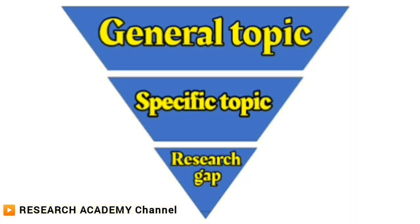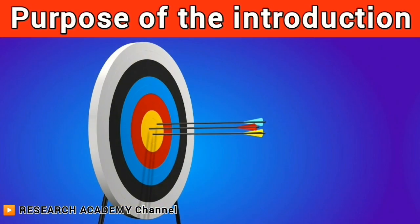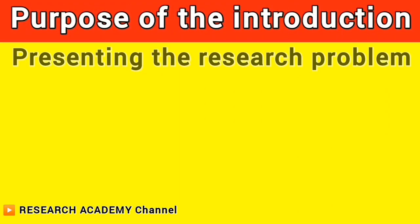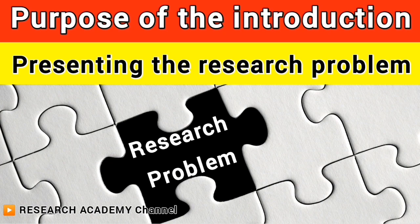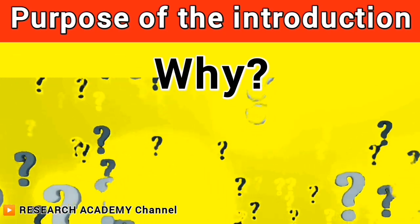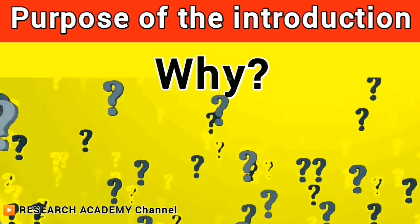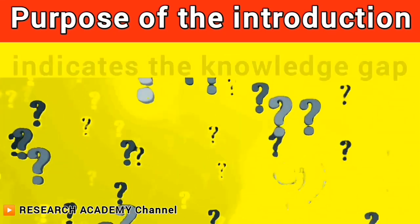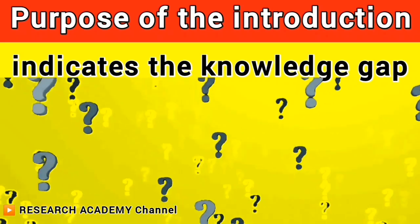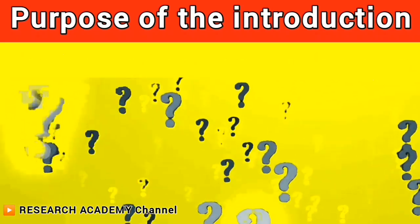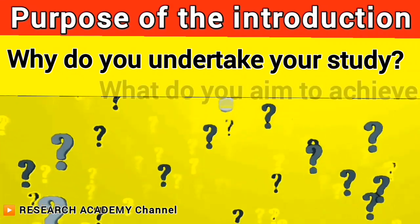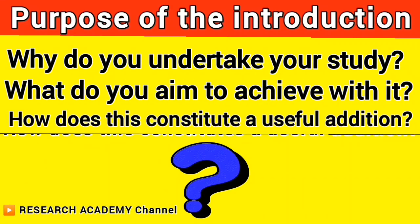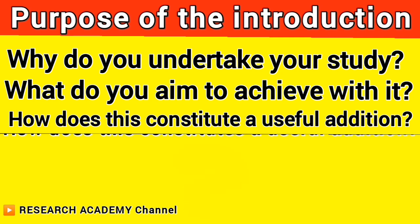It is preferable to write the introduction in an inverted pyramid manner, meaning we go from the general to the specific, paving two lines about the general field before reaching the point of the article. The purpose of the introduction is presenting the research problem and how you arrived at it. Simply, the introduction should answer the question: why? Why did you choose this topic? Why do you see it as important? You can also think of the introduction as a section that indicates the knowledge gap you will fill in the rest of the paper, explaining why you undertook your study, what you aim to achieve, and how this constitutes a useful addition to the existing body of evidence.